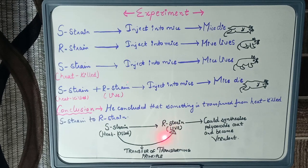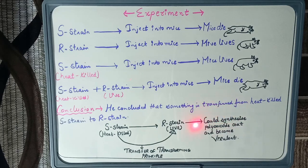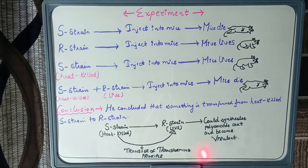This 'something' was given the name transforming principle by Griffith. He concluded that the transforming principle was transferred from heat-killed S strain into live R strain, causing the mice to die. However, Griffith could not determine the biochemical nature of the transforming principle — whether it was RNA, DNA, or protein.